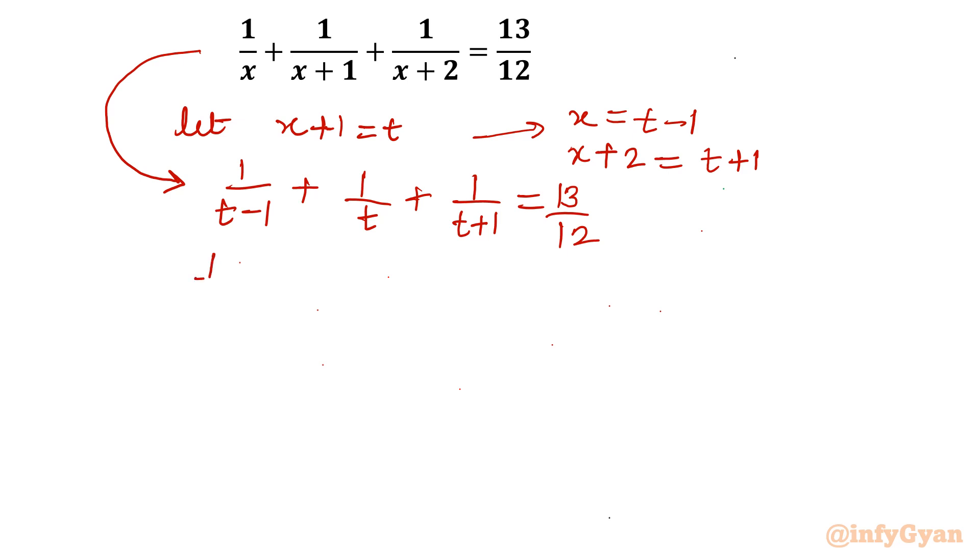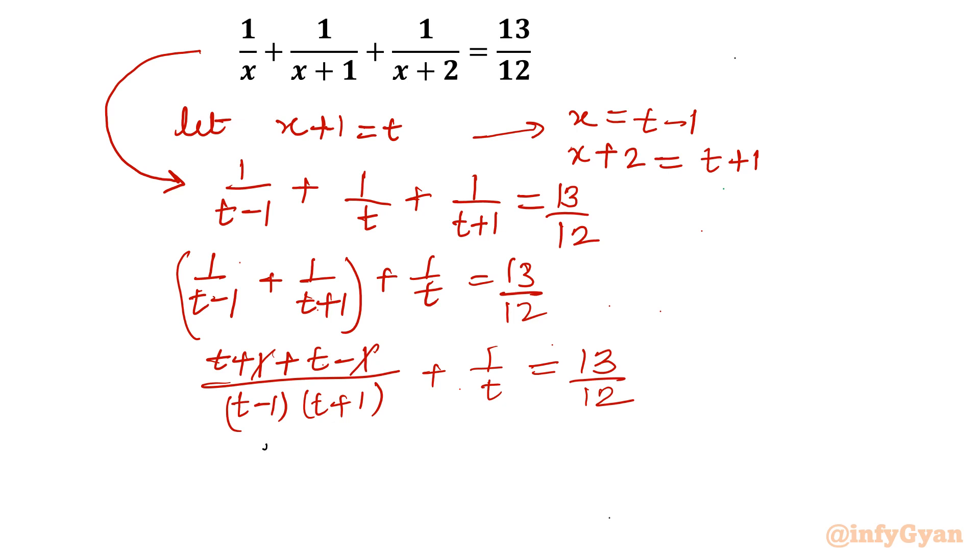So 1 over t minus 1 plus 1 over t plus 1 plus 1 over t equal to 13 over 12. Let us take LCM for the first two terms only. So I will write t plus 1 plus t minus 1 over t minus 1 times t plus 1. In the next step we will write the difference of squares plus 1 over t equal to 13 over 12. Here I can cancel plus 1 and minus 1. So what is left is 2t over t square minus 1 plus 1 over t equal to 13 over 12.